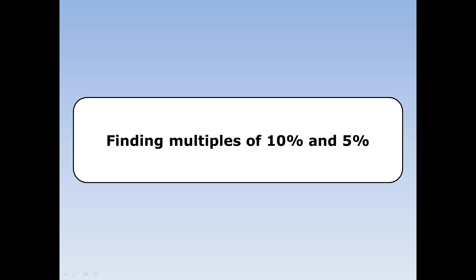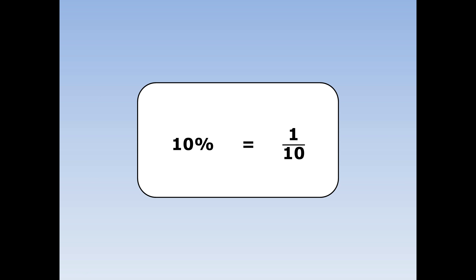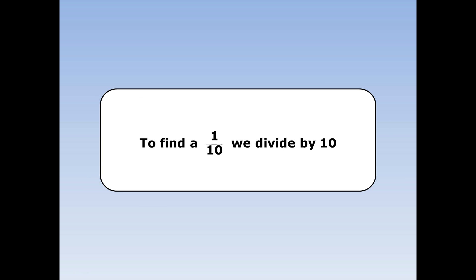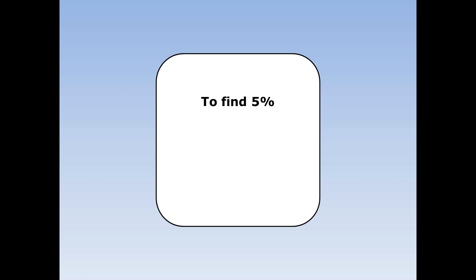Finding multiples of 10% and 5%. 10% is the same as a tenth. To find a tenth, we divide by 10. To find 5%, first find 10% and then divide by 2, because 5% is half of 10%.